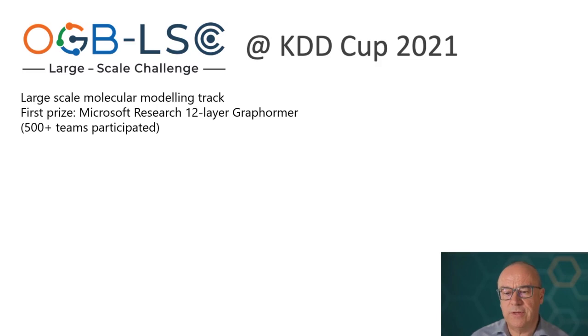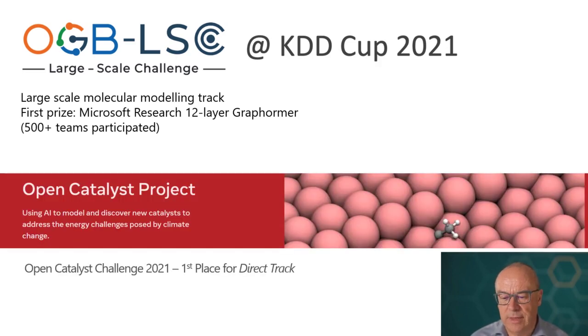So this work was published in NeurIPS last year and also the code is available on GitHub. So the graph former has proved to be very effective in practice. This is a competition, the open graph benchmark large scale challenge. This is the molecular modeling track, in which the first prize was taken by a 12 layer graph former. And then this is another competition, the open catalyst project. This is a large scale catalyst discovery task proposed by Facebook and CMU. And again, first place in the direct track. So this competition was actually motivated by applications in sustainability and climate change, and just shows the very exciting applicability of these ideas.